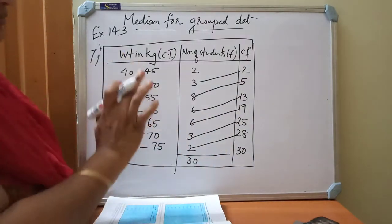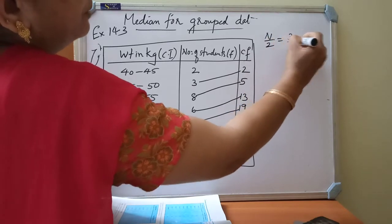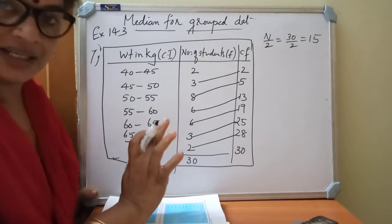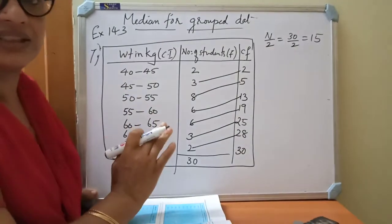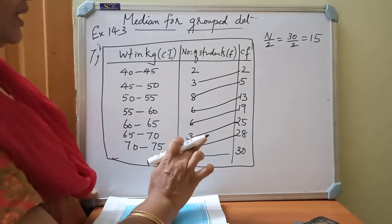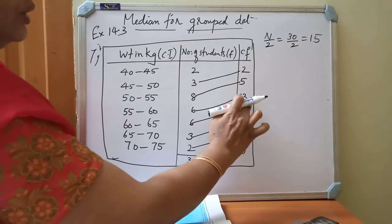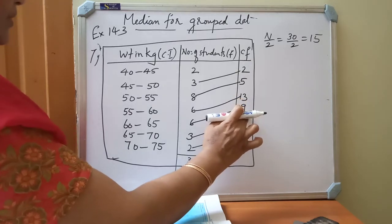So see, we must find out the n by 2 value. n is 30, so 30 by 2 is 15. So what we must find out, median class we must find out. So 15 cumulative frequency's corresponding class is called as the median. So 15 in which class interval comes till 13, third class. So 14 onwards coming till 19, coming the fourth class.